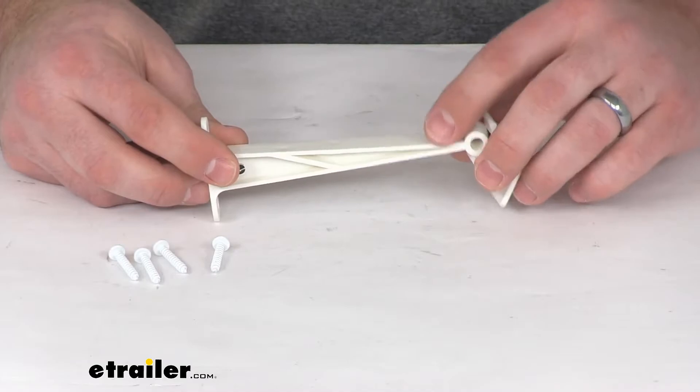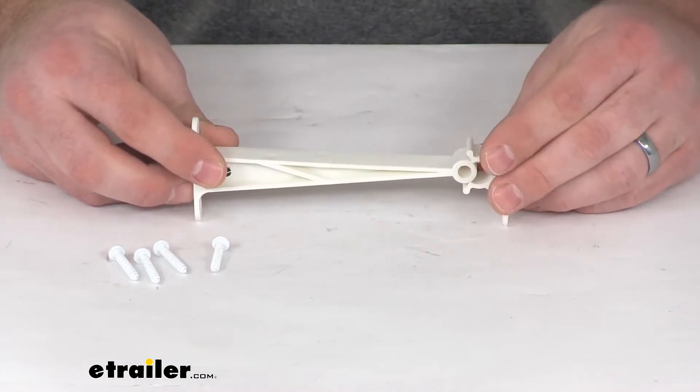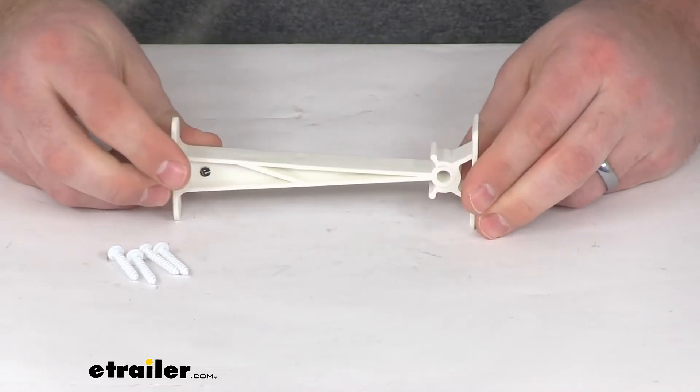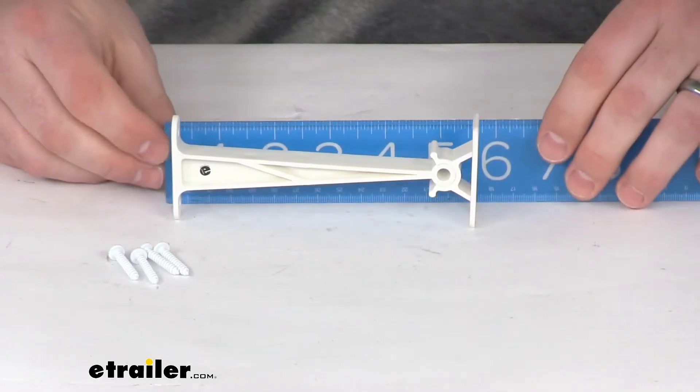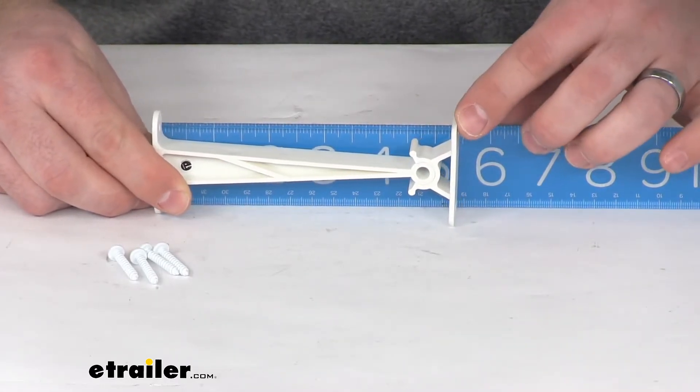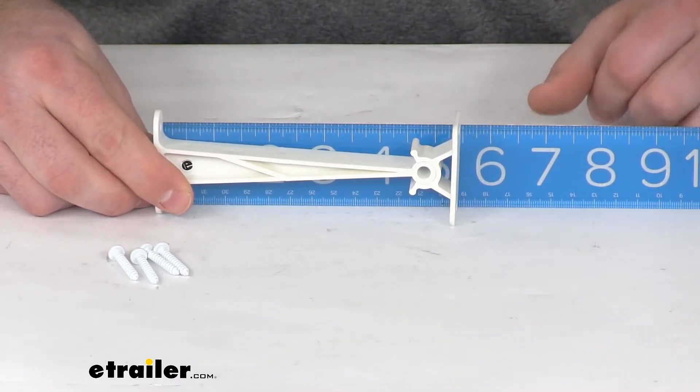This is the polar white color. When we have it connected, I'll give you a measurement here to show you how far this is going to stick out. It's right at five and a half inches, dead on.